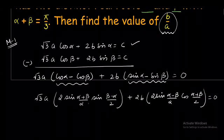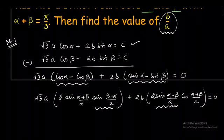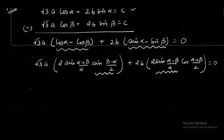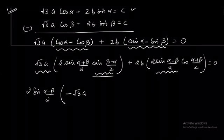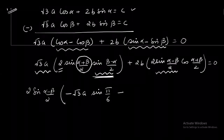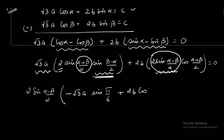Now you can observe that we have certain factors common, like sin(α-β)/2 is a common factor between these two terms. So I am taking 2sin(α-β)/2 common. The first term will be left out as -√3a sin(α+β)/2. α+β is given in the question, so I can write it as π/3. So it will become sin π/6. Plus from the second term, 2sin(α-β)/2 taken common, we are left with 2b cos(α+β)/2. This equals 0.